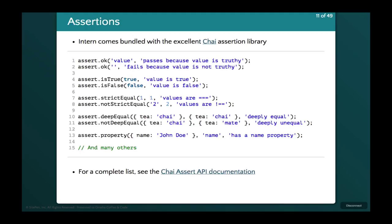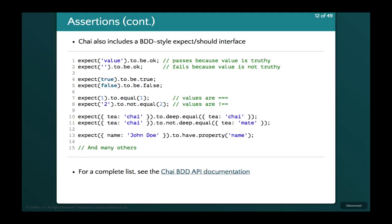We can make a number of assertions — these are helpers that throw an error if the value passed in is not what we expect. We have assert.ok, which checks if something is truthy — a string is truthy, an empty string is falsy so it will complain. We can test for strict true or false values. Strict equal is like triple equals in JavaScript, not strict equal is the inverse. Deep equal lets us compare objects to each other, and we can compare object properties. There are many others — this is Chai, an assertion library at chaijs.org.